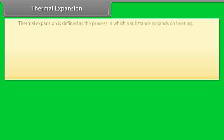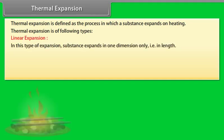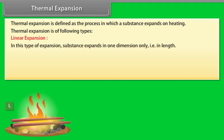Thermal expansion is defined as the process in which a substance expands on heating. Thermal expansion is of the following types. Number 1: Linear expansion — in this type of expansion, the substance expands in one dimension only, that is, in length.